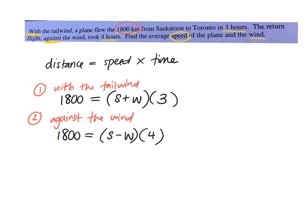Okay, so you can expand this. We can write, we can multiply everything by three. So I can write 3s plus 3w equals 1,800 for the first equation. And the second equation would be 4s minus 4w equals 1,800.